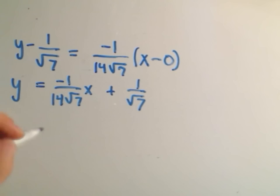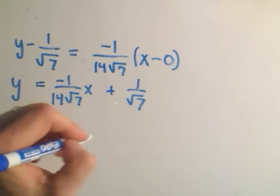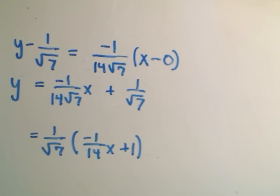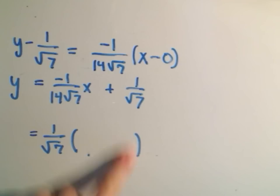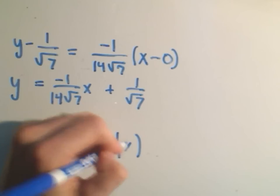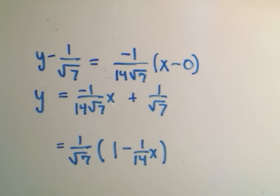So now we can just factor. We'll get 1 over square root of 7. I could write it as negative 1 over 14 x plus 1. But typically people will, if they can, flip it around and make it 1 minus 1 over 14 x. One fewer symbol. Therefore, it's more simplified. And that's now going to be the linearization.